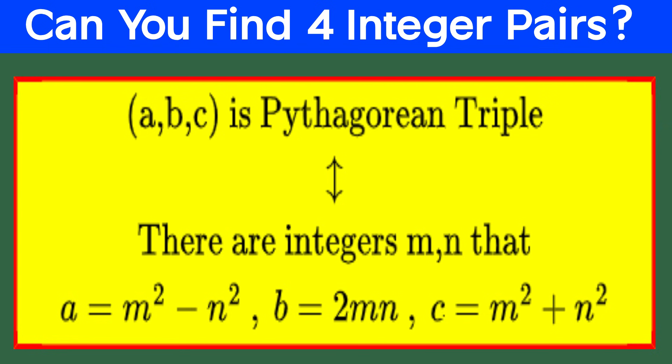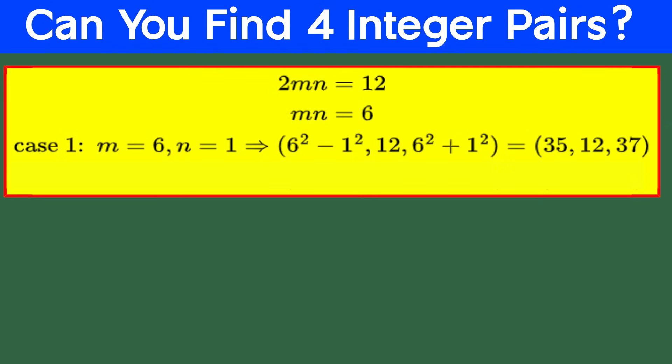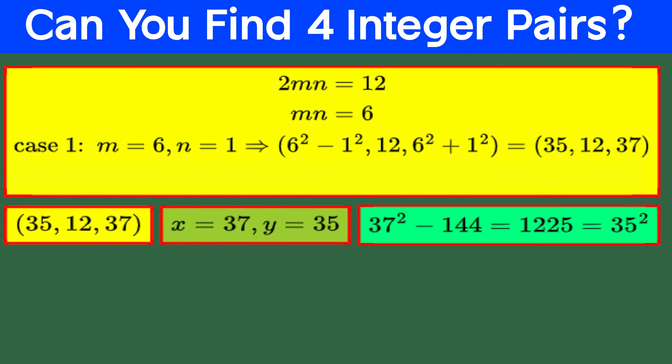So, if we want the second component to be 12, we need the product of m and n to be 6. There are two options for that, one is 6 times 1, which gives us the triple, 6 squared minus 1 squared equal to 35, 12, 6 squared plus 1 squared equal to 37. Let's check it out, 37 squared minus 144 equals 1225, which equals 35 squared. Looking good.